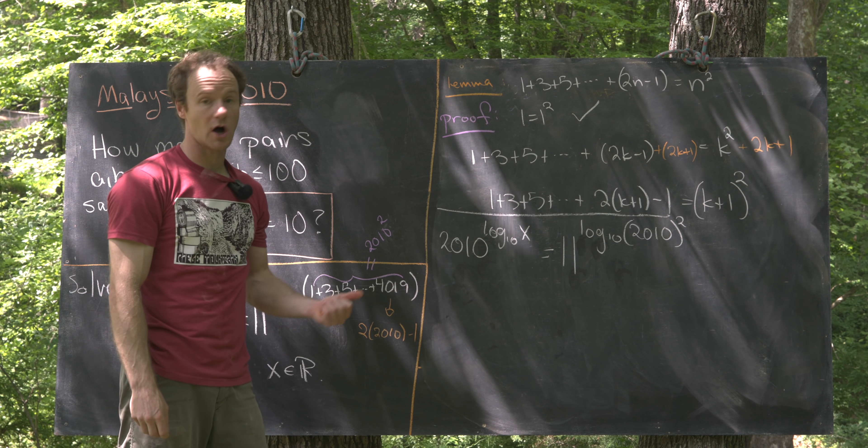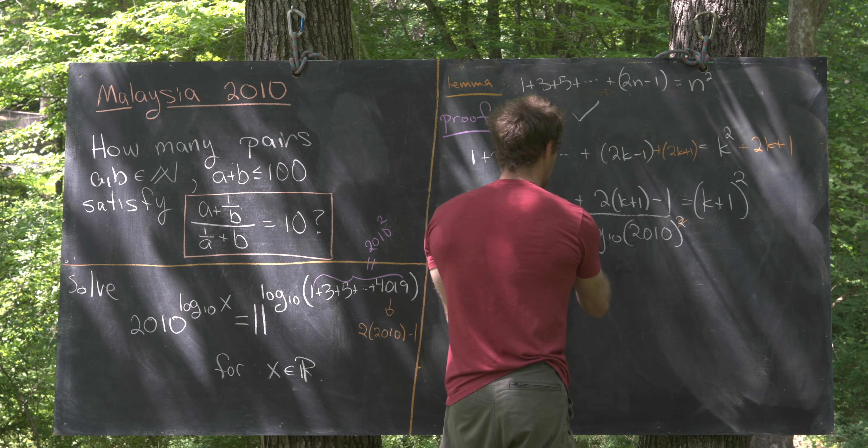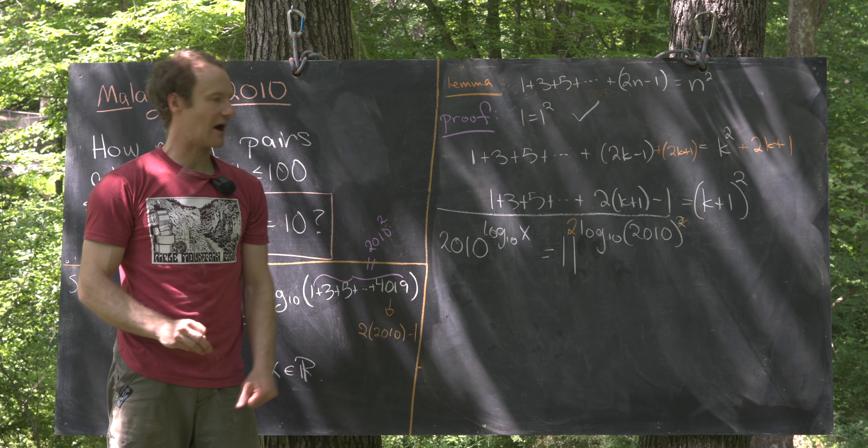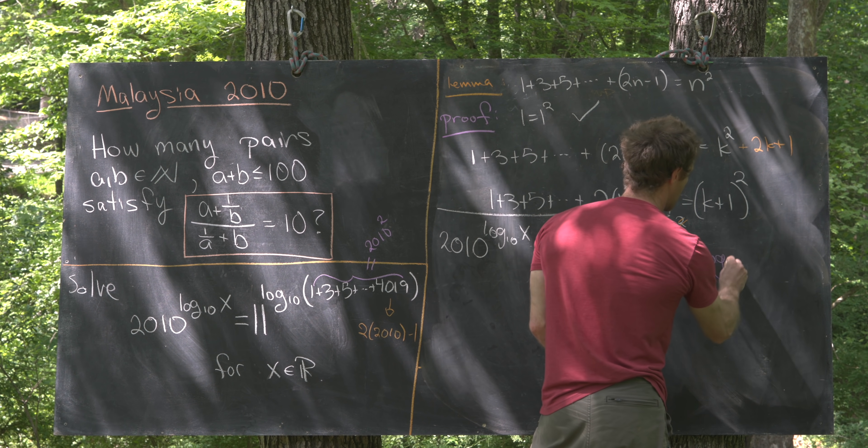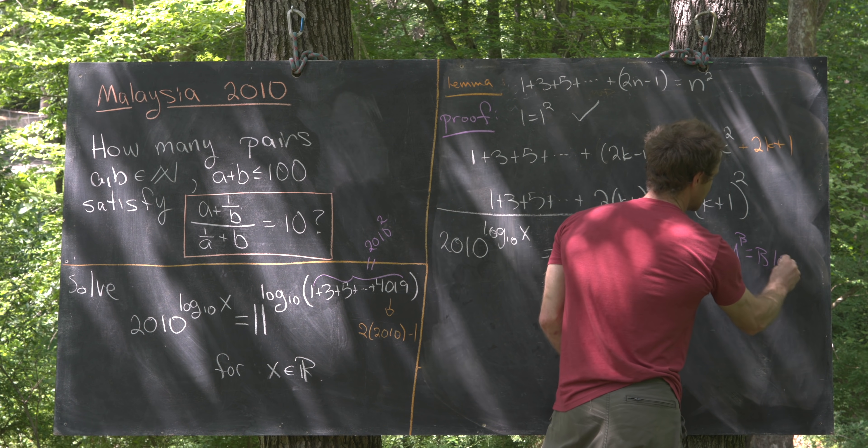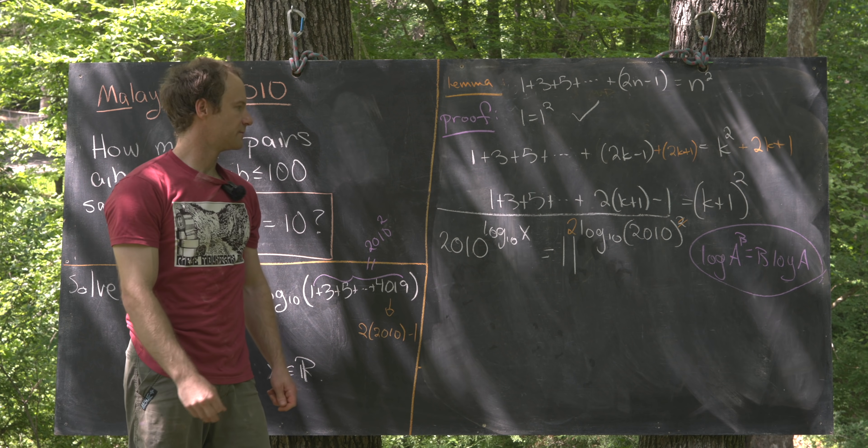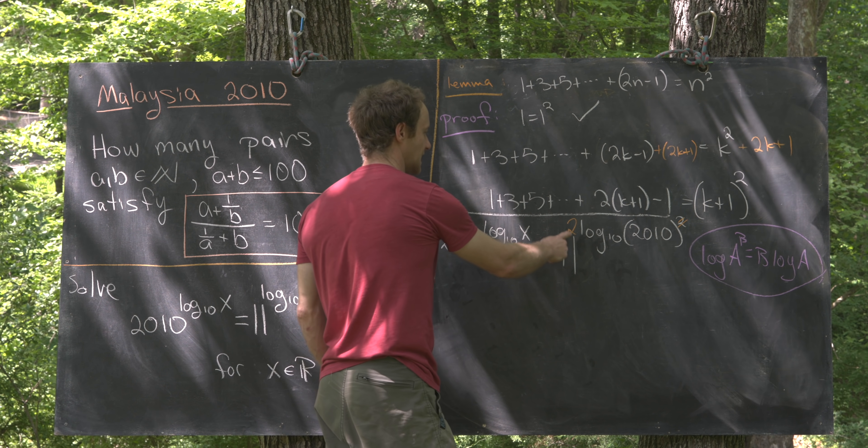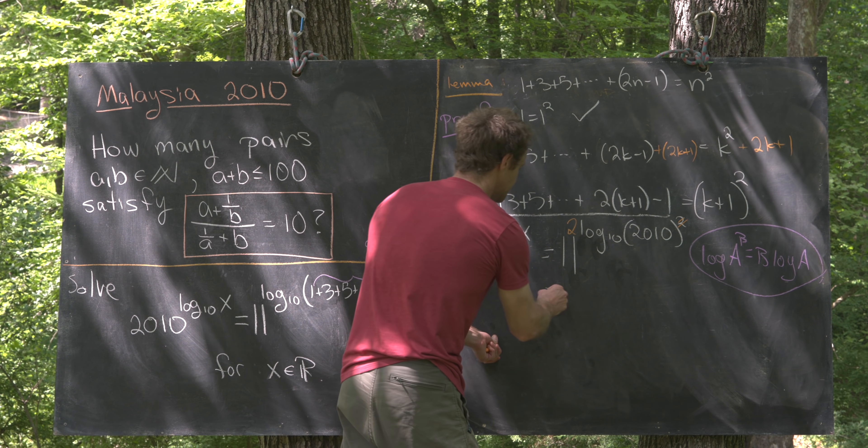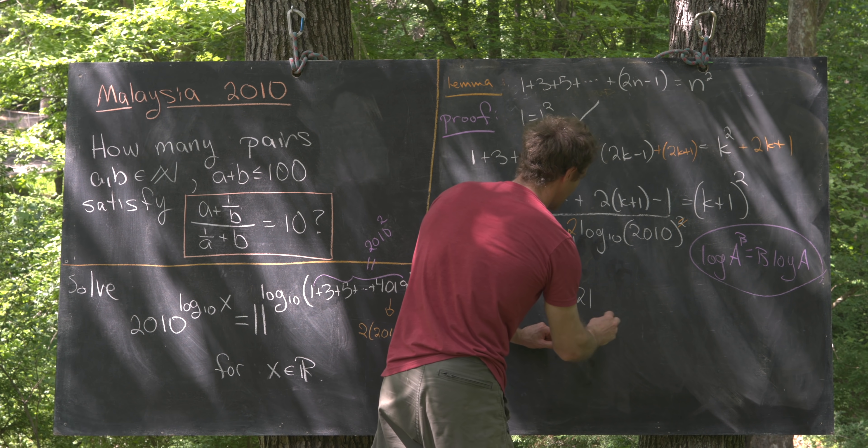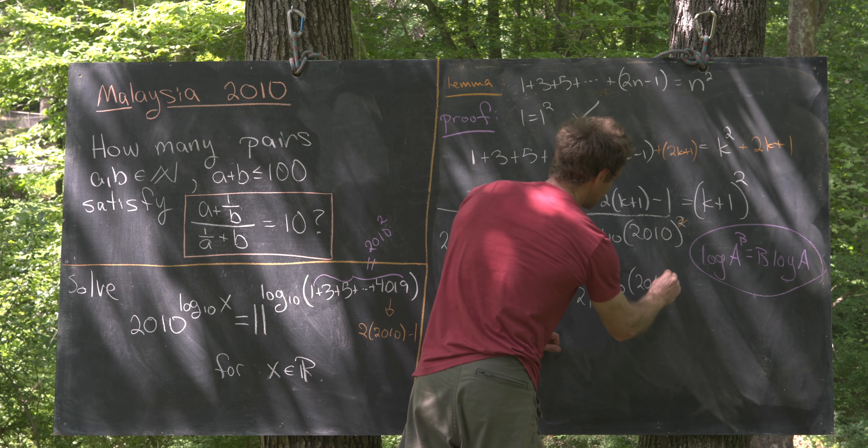Now let's use some logarithm rules here. We can take this 2, bring it down, and it will multiply the logarithm out front. And so that's from a standard logarithm rule that log a to the b is b times log of a, which is true for any base of logarithm. Next, we see that this is 11 squared to the power of log base 10 by some exponent rules. So here we have this is 121 to the power of log base 10 of 2010.